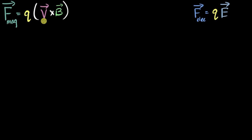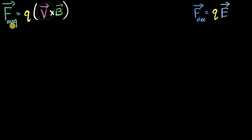If we just look at the equations, we find the main difference is over here. The magnetic force — the Lorentz force — has V cross B in it. And that itself causes a huge difference in the way the two forces behave. So we'll first compare their strengths, and then we'll compare their directions.